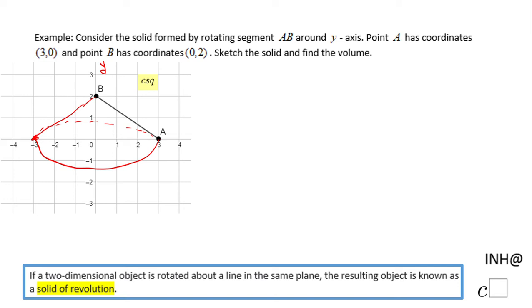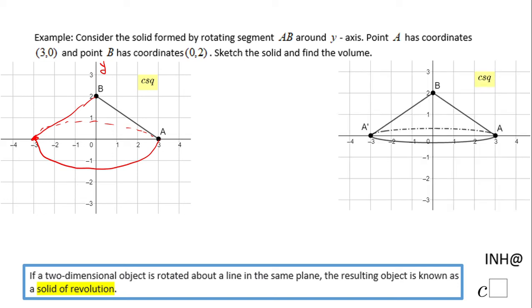Because this guy here is a cone—this is the object, this is the solid of revolution, as we call it, that you'll obtain if you rotate segment AB around the y-axis. And we need to find the volume.